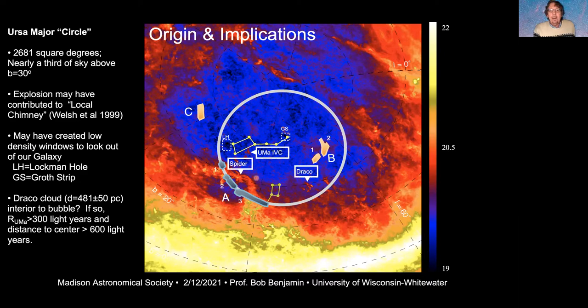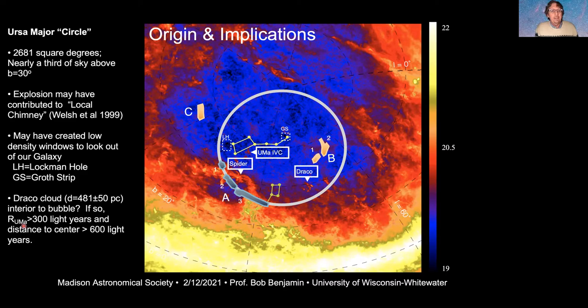We have a very indirect argument for how far away it is. There's a cloud called the Draco Cloud inside the projected bubble that looks as if it's been shocked by a supernova blast wave, and we have a distance to that. If the Draco Cloud is inside this bubble, the radius of this thing is about 300 light-years and the distance to the center is about 600 light-years above the plane of the galaxy — a pretty uncertain estimate, but the only thing we have to go on.